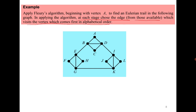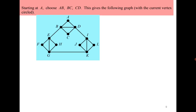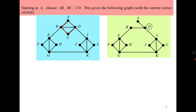Please try it yourself and verify the answer. From A, moving alphabetically, go to B; from B go to C; from C go to D. Now from D, alphabetically I should go to A, but DA is a bridge and I will be stuck there. Therefore instead of DA I go to DB, then B to E, E to F, and F to G.